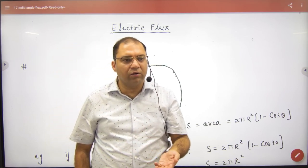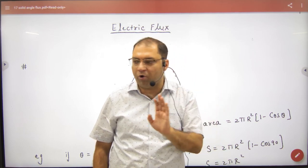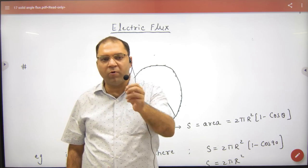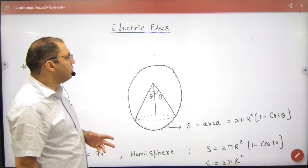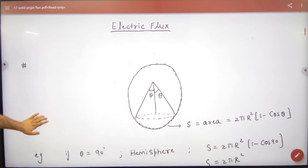I also said that for an arbitrary body, it can be proved that Q upon epsilon naught is the total flux. But for this, we have to learn a concept called solid angle.